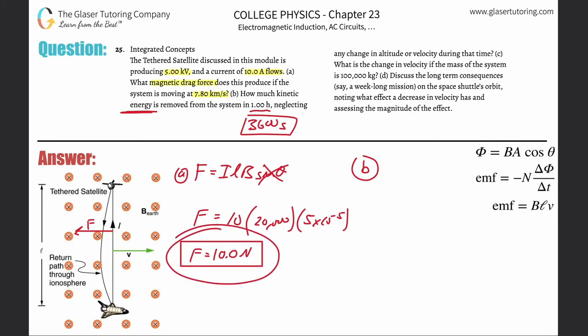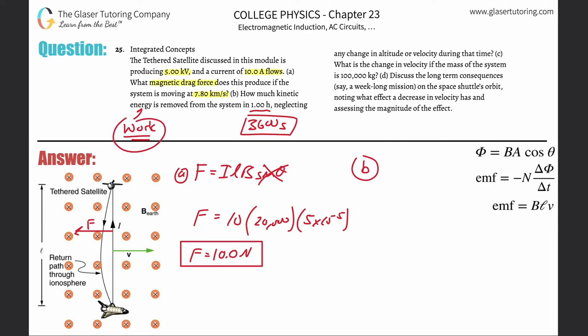Energy can be thought of as work — both are in joules. Work is related to force via: work equals force times the distance over which that force is applied. Since there's no change in altitude, all the work done goes directly to kinetic energy.